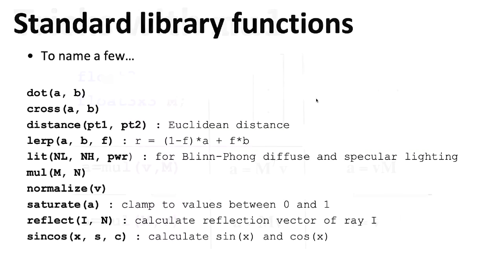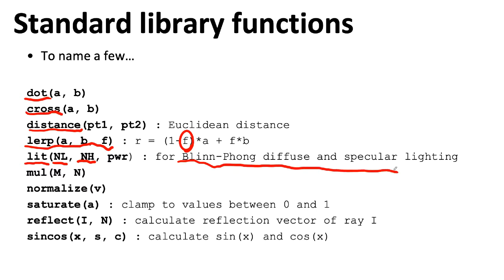HLSL and most other shader languages have a lot of built-in commands. There are things like dot products and cross products — you could write these out explicitly if you wanted. You can find the distance between things. One interesting aspect of the linear interpolation command is that your F doesn't need to be between zero and one, so you can extrapolate to different extremes. The LIT command is a little weird — it maps to a shader model SINLIT instruction, and if you pre-compute the normal dot light vector and normal dot half vector, it computes the old-school Blinn-Phong lighting model, although every piece of shader code I've seen implementing Blinn-Phong just codes the equations directly.